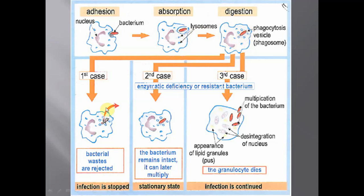However, this process of digestion of the intruder is not always successful. In the best case, the infection is stopped and the bacterial wastes are rejected due to the digestion of the microorganism. However, in certain cases, the bacterium is resistant and stays intact inside the vesicle and can later multiply — a stationary state where the bacterium stays inside the phagocyte for a period of time. Also, the bacterium might be strong enough to multiply inside the phagocyte, leading to its destruction, and then go on to infect other cells.